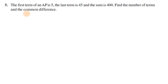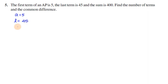Problem number 5.3, problem number 5. The first term of an AP is 5. The last term is 45. The sum is 400. Find the number of terms and common difference. The first term is 5, the last term is 45, the sum is 400.